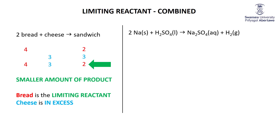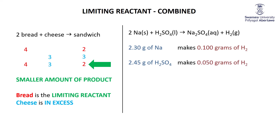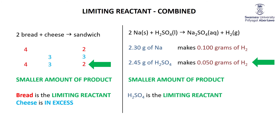Applying that thinking to our chemistry: 2.3 grams of sodium can make 0.1 grams of H2, but 2.45 grams of H2SO4 can only make 0.05 grams of H2. We make the smaller amount of product — 0.05 grams. H2SO4 is the limiting reactant; the sodium is in excess and we'll have some sodium left over.